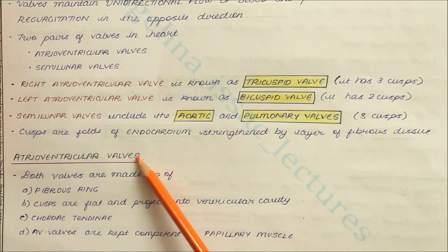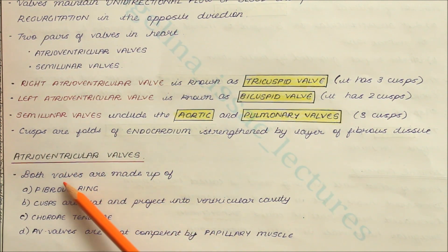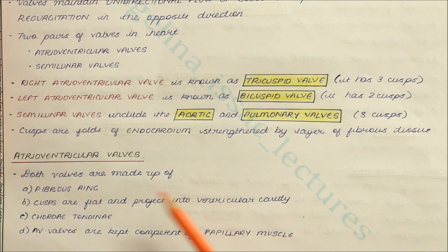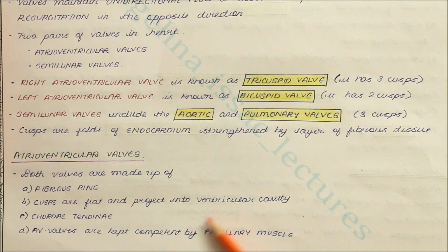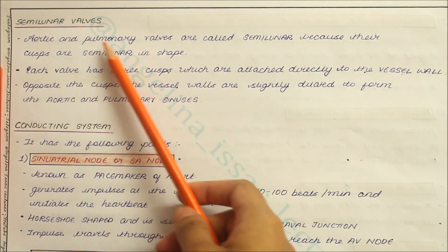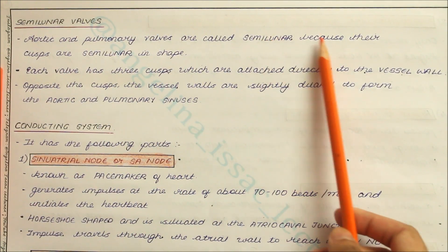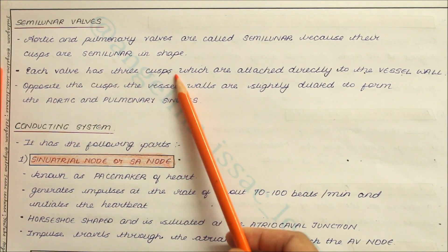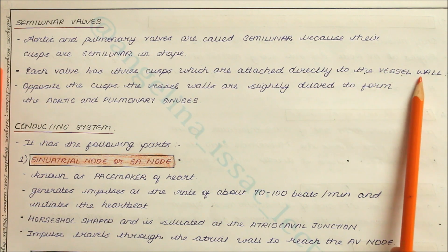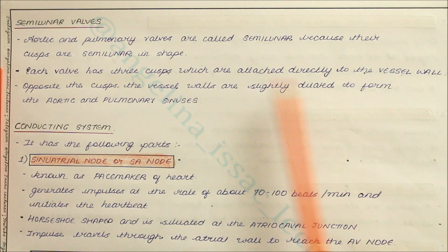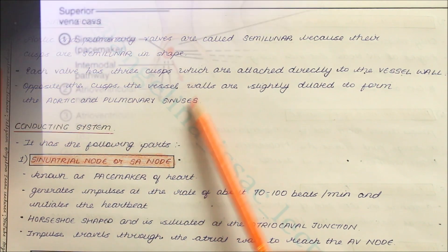Looking at the atrioventricular valves: both are made up of a fibrous ring, flat cusps projecting into the ventricular cavity, chordae tendinae, and are kept competent by papillary muscles. For the semilunar valves: the aortic and pulmonary valves are called semilunar because their cusps are semilunar in shape. Each valve has three cusps attached directly to the vessel wall, and opposite the cusps the vessel walls are slightly dilated to form the aortic and pulmonary sinuses.